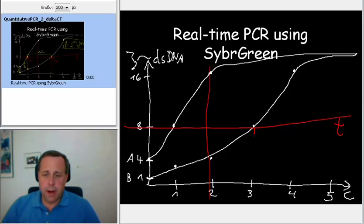What we do then is to ask at what cycle do we reach the threshold. So in this case it's here, and you can do that for sample A that has been present in higher amounts as well. This is again our cycle where we reach the threshold CT. So in this case it's CT of A, and here it's CT of sample B.